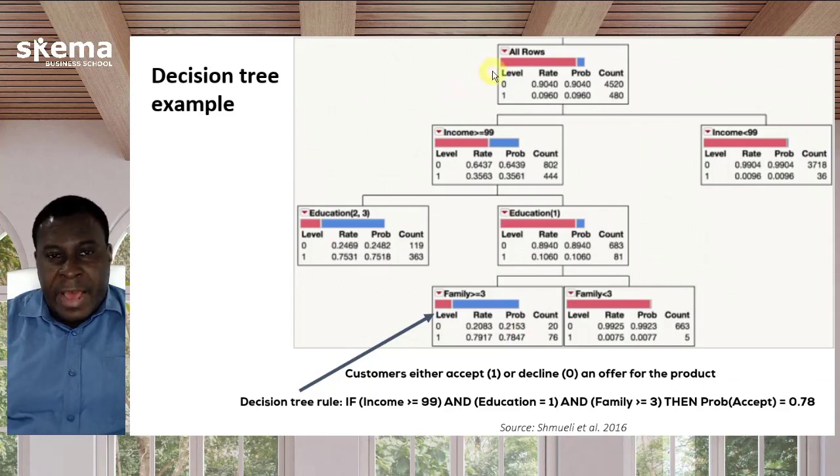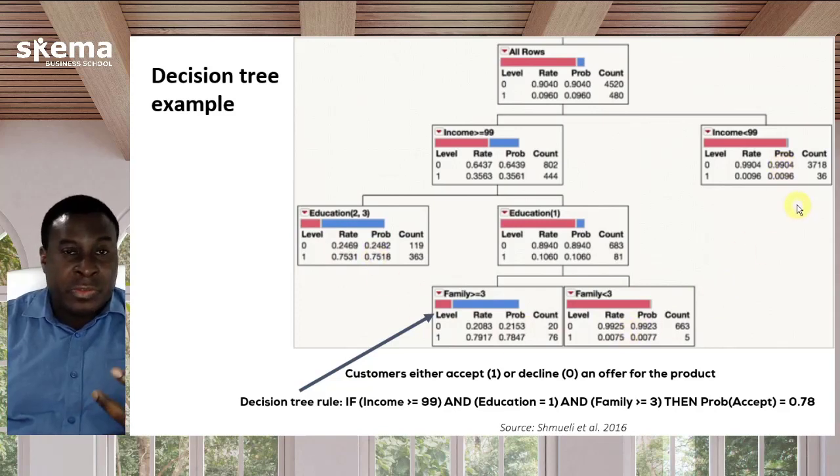The decision tree we have here is first of all an upside-down tree. The upside-down tree of a decision tree begins at the roots on top, and then it goes downwards through the branches, and the nodes at the end are called the leaves. That's the general structure of a decision tree as an upside-down tree.